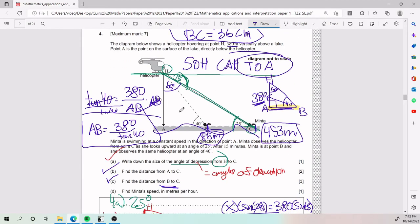For part D, we need to find Menta's speed in meters per hour. Alright. You got to be careful here, particularly with units. That is what the IB tries to catch you with anyways most of the time. So the scenario is the following. After 15 minutes, as the problem told us in its description, we know that after 15 minutes, Menta is at point B. So Menta traveled from C to B in 15 minutes.